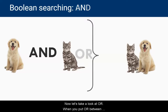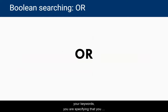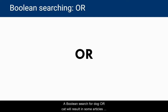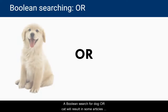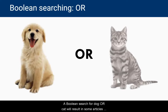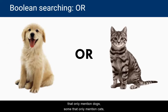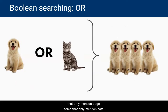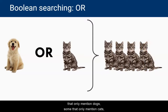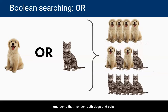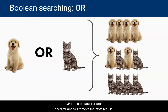Now let's take a look at OR. When you put OR between your keywords, you're specifying that you want your results to include either of those terms. A Boolean search for "dog OR cat" will result in some articles that only mention dogs, some that only mention cats, and some that mention both dogs and cats. OR is the broadest search operator and will retrieve the most results.